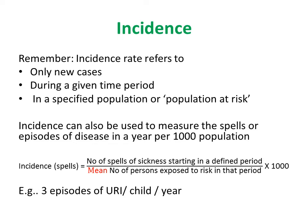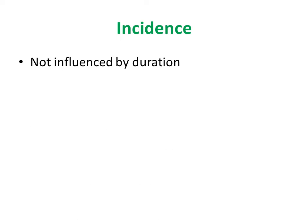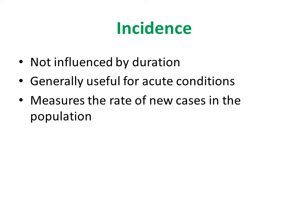We need to know incidence in terms of spells to indent the right amount of medication required for the year. For example, 3 episodes of upper respiratory tract infection per child per year have been reported, and accordingly medications are indented for that health facility. Note that incidence is not influenced by the duration of the disease. It is generally used for acute conditions like sore throat, diarrhea, and injury, and it measures the rate of new cases in the population.